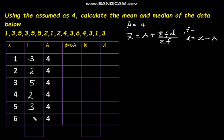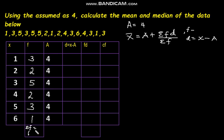Therefore, we shall calculate the sum of the frequencies: 3 plus 2 is 5, plus 5 is 10, plus 2 is 12, plus 3 is 15, then plus 1 — that is 16.